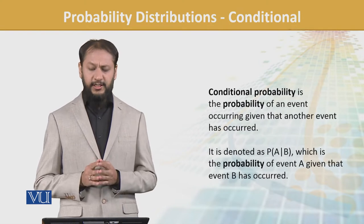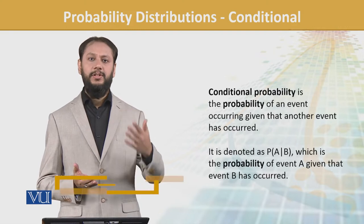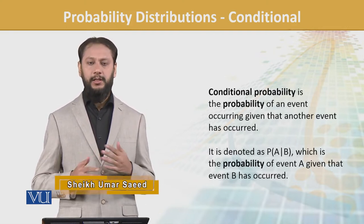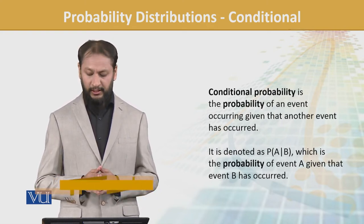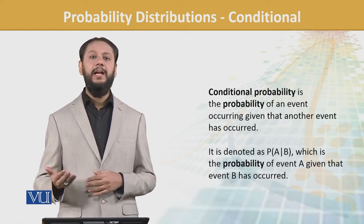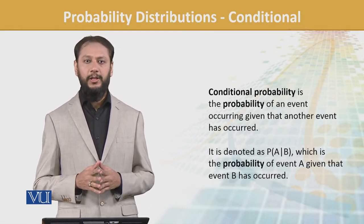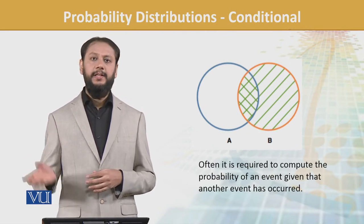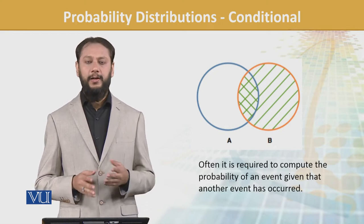Conditional probability is the probability of an event occurring given another event has occurred. It is denoted as A slash B, which is probability of event A given event B has occurred. We see the implication and impact of A once B has passed.